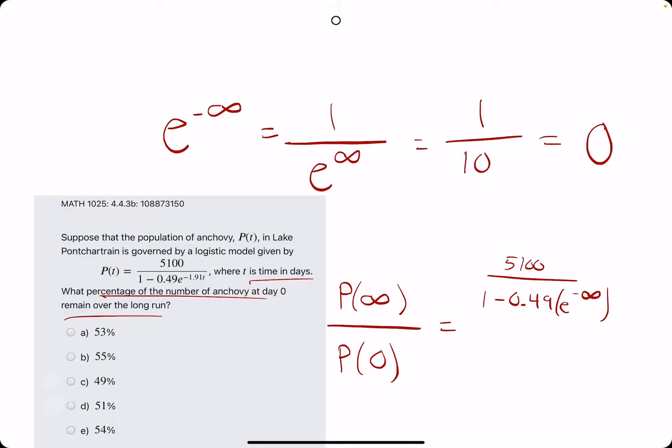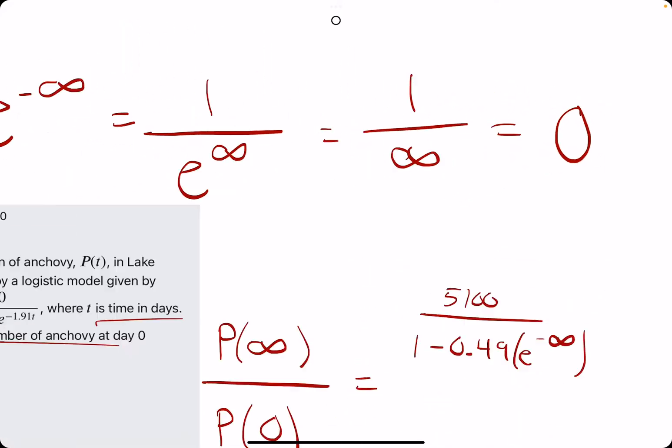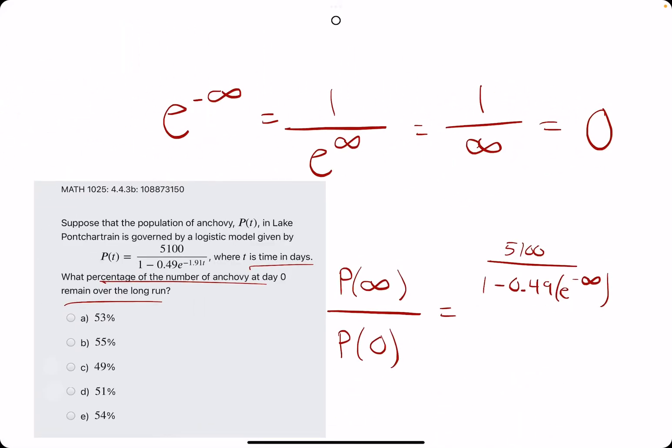1 divided by infinity is approaching 0. 1 over 100 is a small decimal. 1 over 1,000, even smaller decimal. And this idea extends to 1 to the infinity. So, you could plug in to your calculator like 1 divided by 99999 or something, and you'd get something very close to 0. So, that's the idea here.